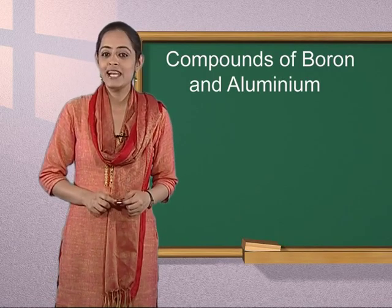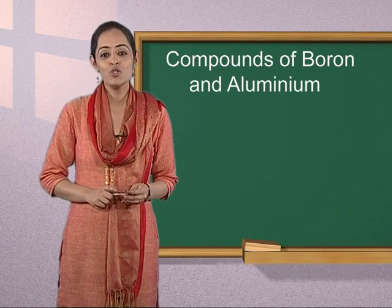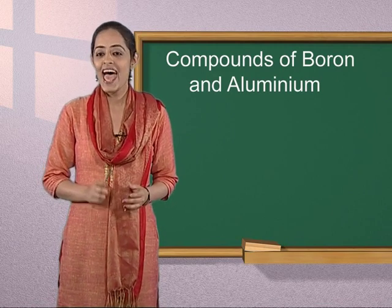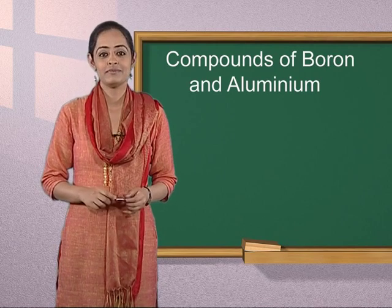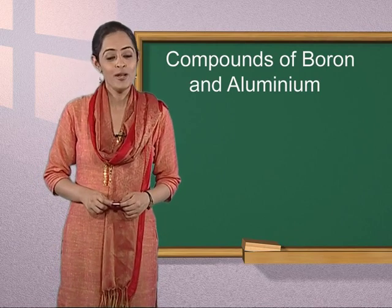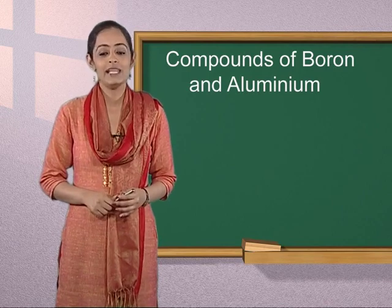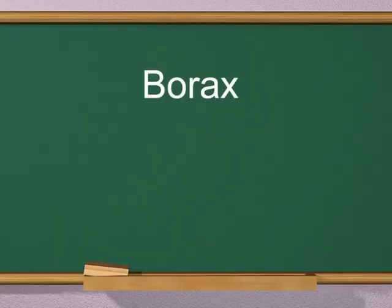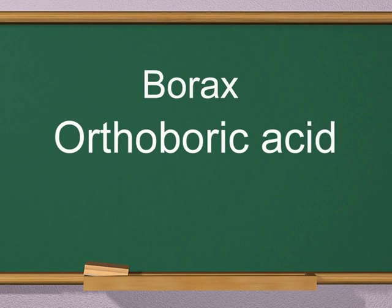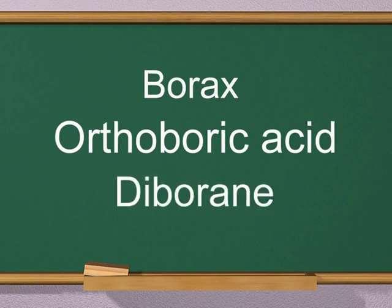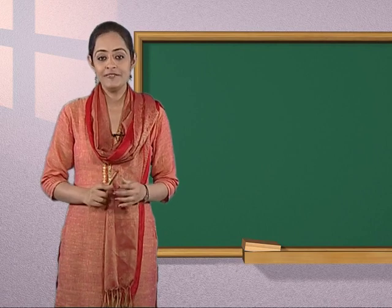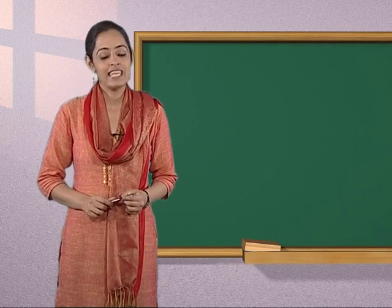Children, today we will learn about compounds of boron and aluminum. Boron forms a number of useful compounds like borax, orthoboric acid, and diborane. Today, we will briefly learn about their chemistry.